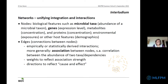To be clear: networks consist of nodes and edges. Nodes can really refer to any biological feature such as microbial taxa, gene expression, but also environmental exposures. Edges or connections between nodes can be empirically or statistically derived — often just associations — and can be unweighted or weighted to reflect association strength, undirected or directed to reflect cause and effect.